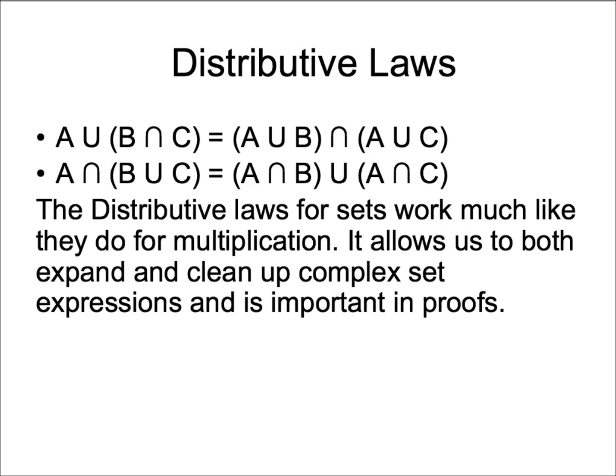The next type of set identities is the distributive laws, which work much like they do for multiplication that we all learn in algebra. They allow us to both expand and clean up complex set expressions and are important in proofs. The first distributive law states that the union of set A and the intersection of B and C is the same as the intersection of the union of A and B and the union of set A and C.